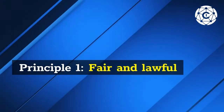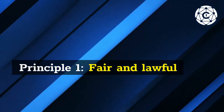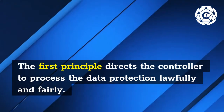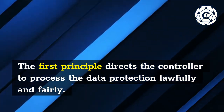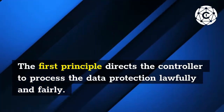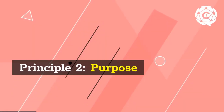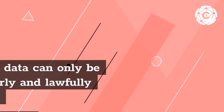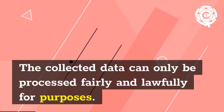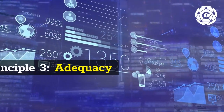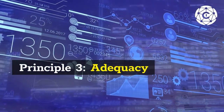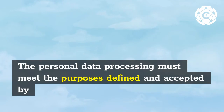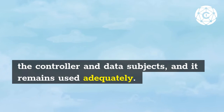Principle 1 - Fair and Lawful: the first principle directs the controller to process the data lawfully and fairly. Principle 2 - Purpose: the collected data can only be processed fairly and lawfully for defined purposes. Principle 3 - Adequacy: the personal data processing must meet the purposes defined and accepted by the controller and data subjects, and it remains used adequately.